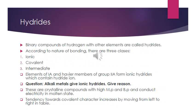Now let's see hydrides. Hydrides are also binary compounds — hydrogen combined with other elements. Based on bonding nature, we classify them into three classes: ionic, covalent, and intermediate. Group 1A elements and heavier members of group 2A form ionic hydrides, in which the hydride ion carries a negative charge.